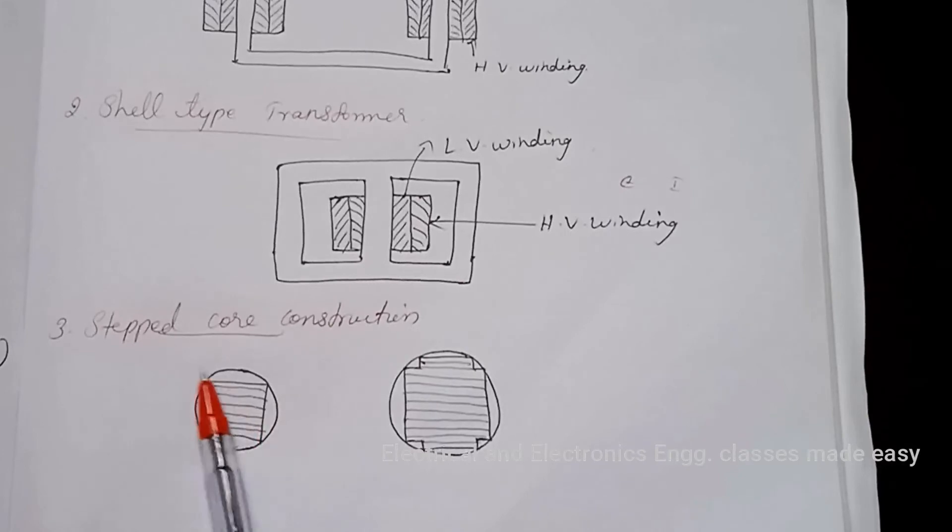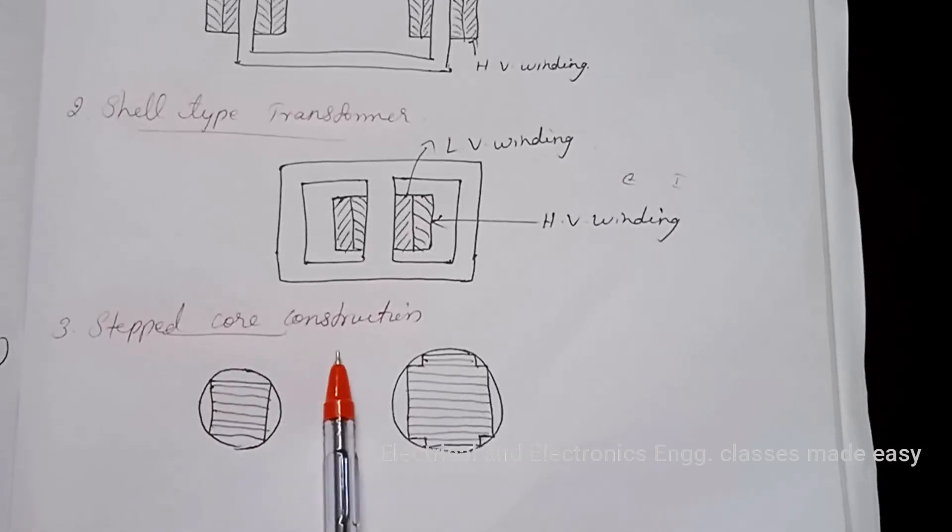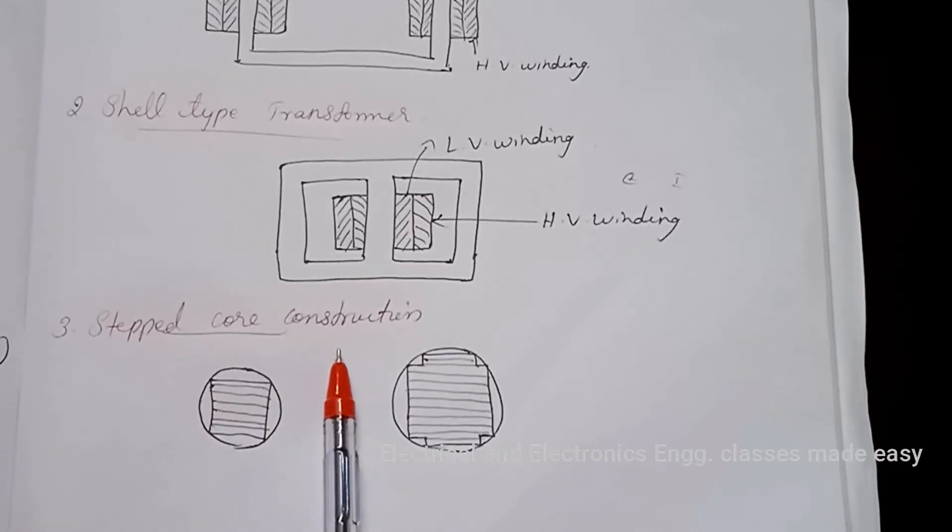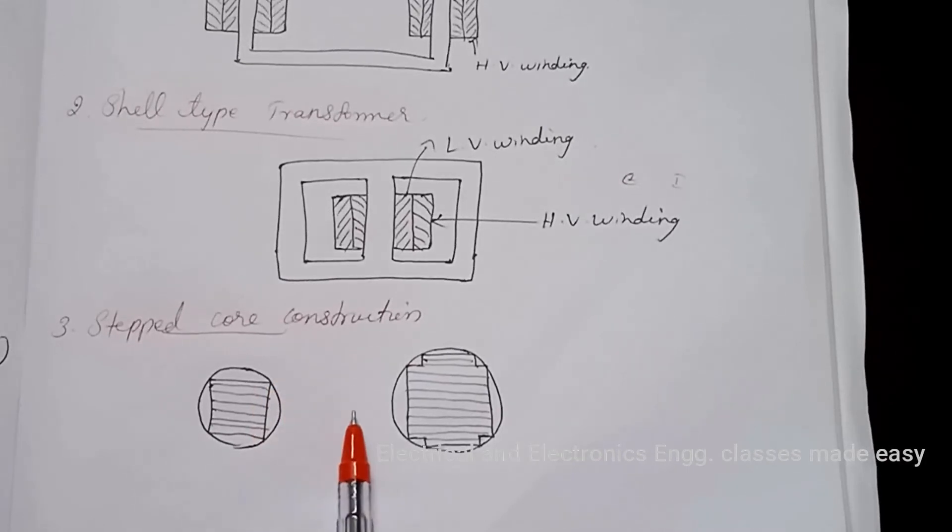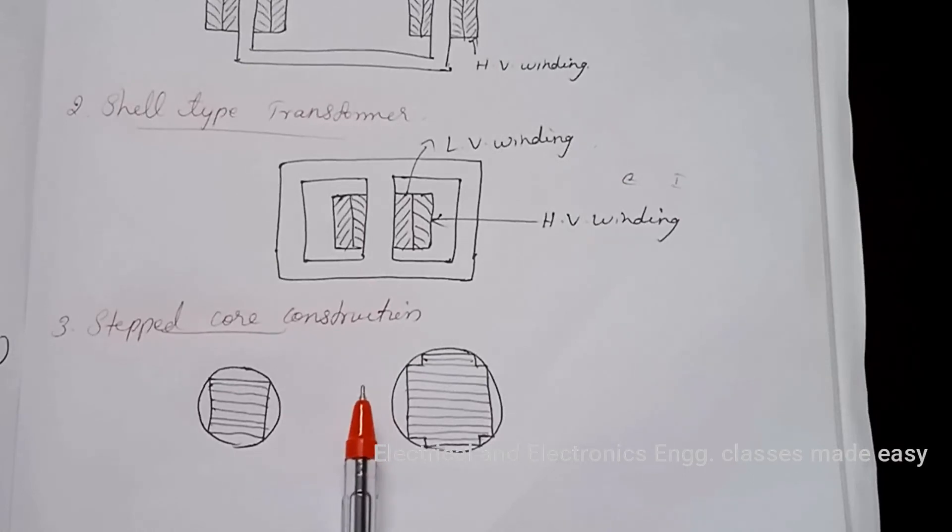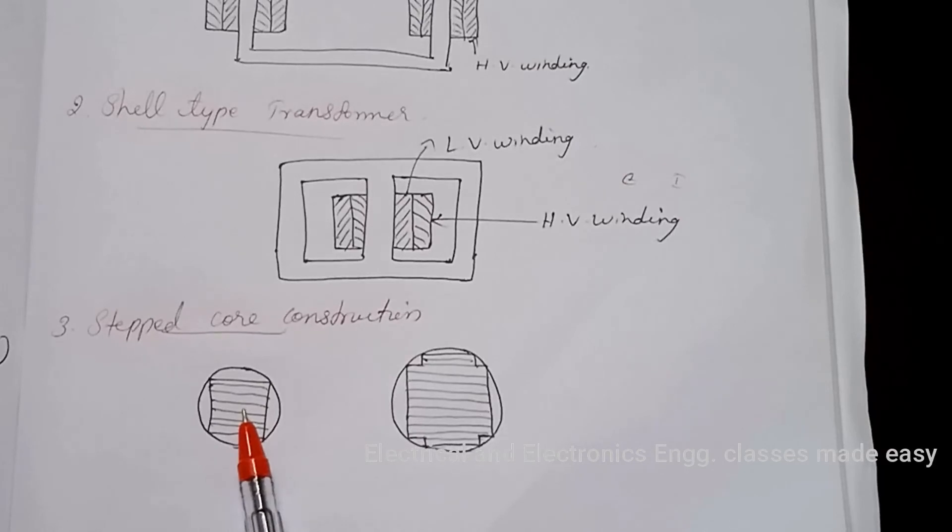There is one more type, that is stepped core construction. For large transformers, coil will be of the form of circular cylinders. A considerable amount of useful space is wasted in square core construction. A common improvement on square core is to employ cruciform core. This is called cruciform core construction.